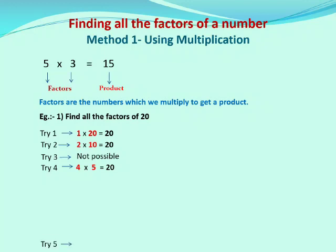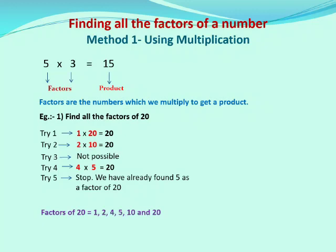Next, try 5. We can see that 5 is already a factor here, so we will stop, because we have already found 5 as a factor of 20. Now, if we go in the shape of a U, we will get all the factors of 20 in ascending order. So the factors of 20 are: 1, 2, 4, 5, 10, and 20.